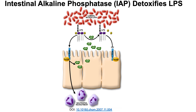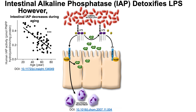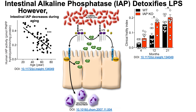Everybody knows having too much inflammation is bad, and it increases during aging. However, intestinal levels of IAP decrease during aging — human data shows that IAP in intestinal contents in someone in their 30s at around 0.4 is reduced to about half, 0.2, in someone that's 70. So aging induces decreased IAP activity.